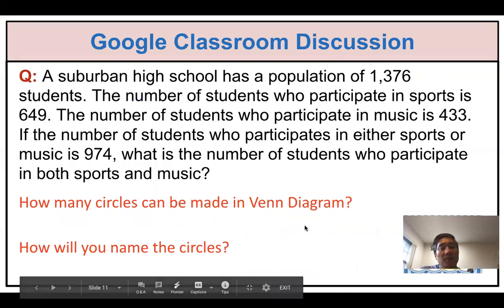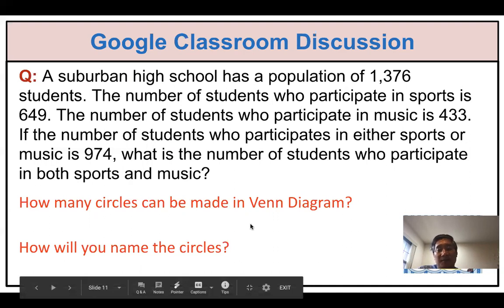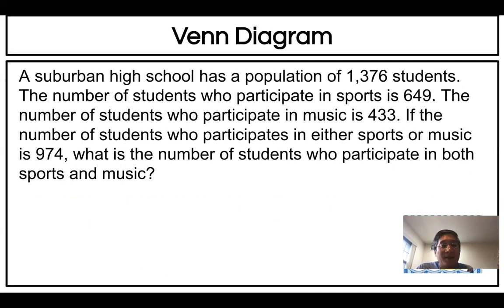You go to the Google Classroom discussion and please answer there. Let's read the question. A suburban high school has a population of 1,376 students. The number of students who participate in sports is 649. The number of students who participate in music is 433. If the number of students who participate in either sports or music, which is union, is 974, what is the number of students who participate in both?